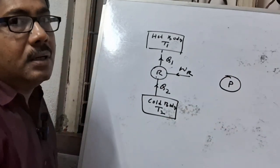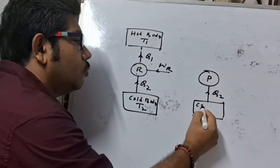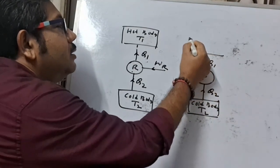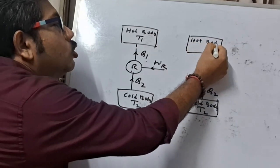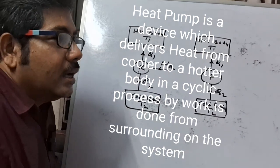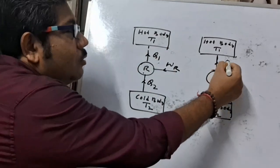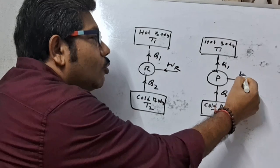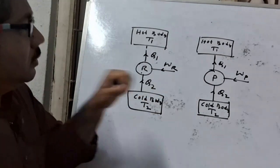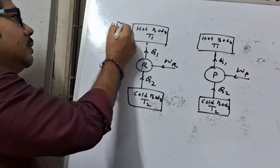Now assume this is a heat pump. It also absorbs heat Q2 from a cold body at temperature T2, and delivers heat Q1 to a hot body at temperature T1. A heat pump is a device where heat is transferred from a cooler body to a hotter body. Here also, Q1 is greater than Q2, so work is done on the pump — W subscript P. In this way, a heat pump works as a refrigerator, or a refrigerator works as a heat pump.